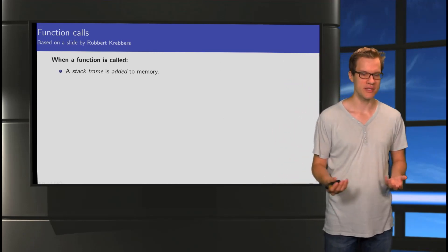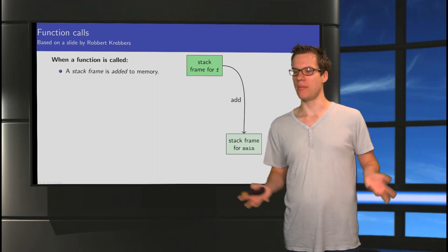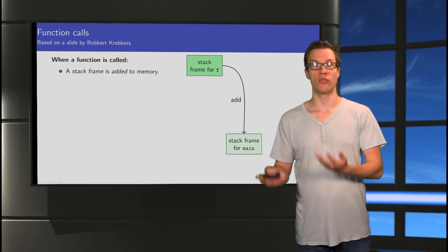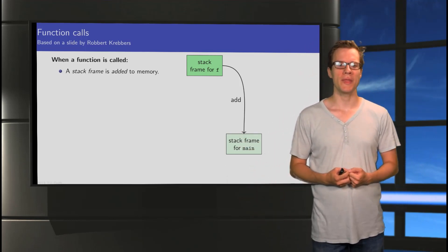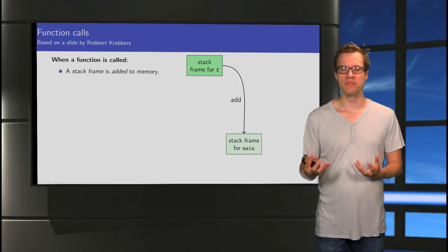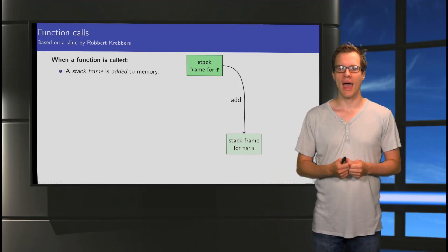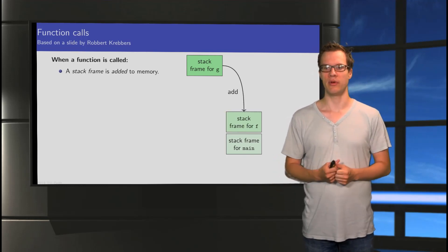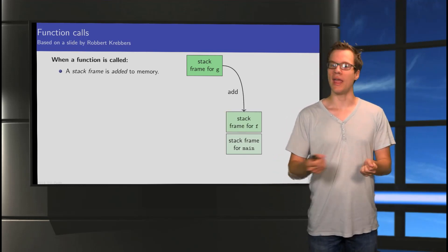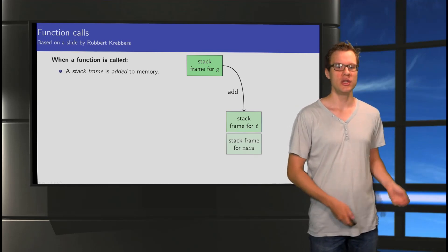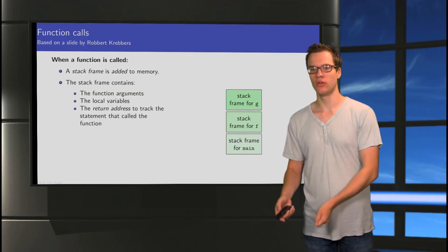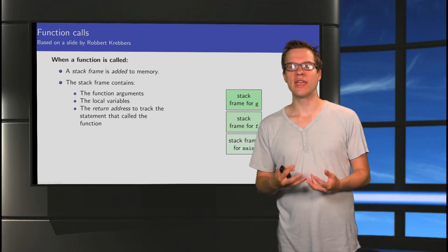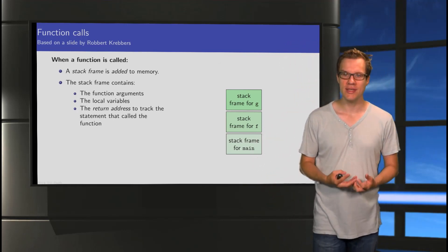And for this we take a look at what happens when we call a function. When we call a function, we say that a stack frame is added to memory. Sounds fancy. So what does that mean? Well, imagine that I'm currently just in my main program. In Python, I've called my script, or in Java, I've called the main function. And from this main, I'm calling a function f. At that point, a stack frame for f will be added to my memory, to my stack. And then in f, I call another function, I call g. So again, a stack frame is added on top.